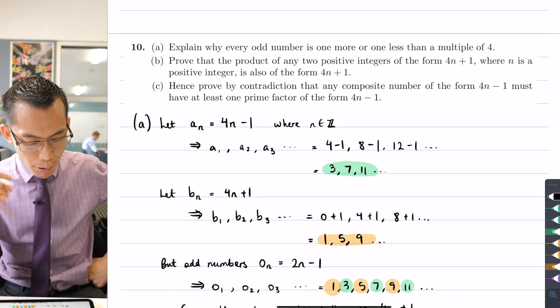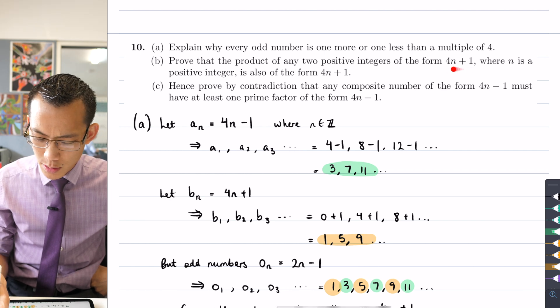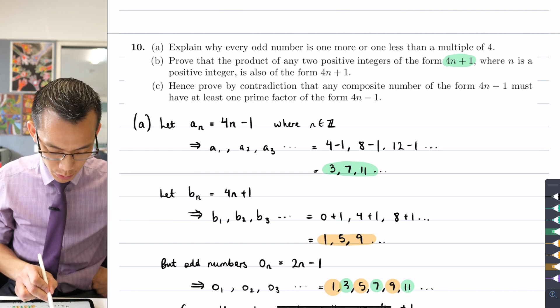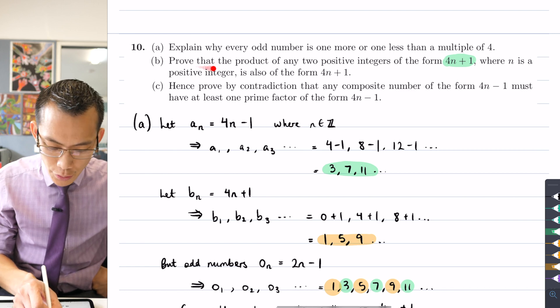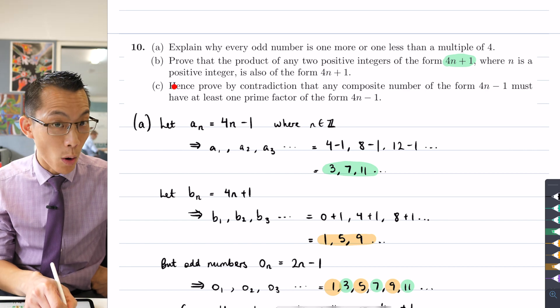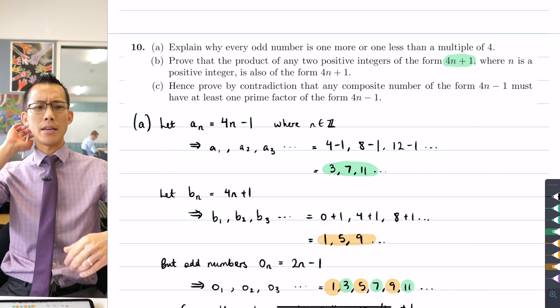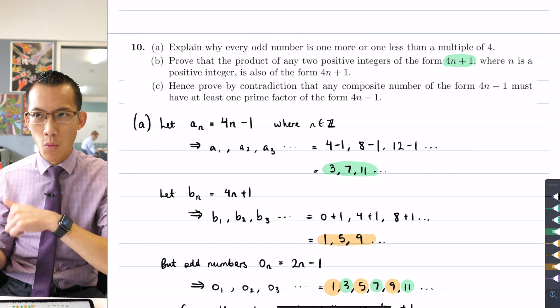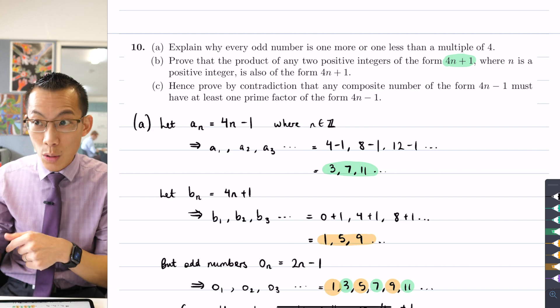Scrolling back up, prove that the product of any two positive integers of the form 4N plus one, that seems pretty important and we used this from earlier on when talking about this 4N plus one. These are all of the numbers one more than a multiple of four. Prove that the product of any two positive integers that look like this, where N is a positive integer, is also of the form 4N plus one. So what are we saying here? What we're suggesting is if you've got two numbers that are both one more than a multiple of four, then if you multiply them together you get another number that is also one more than a multiple of four.